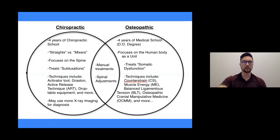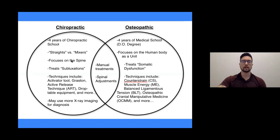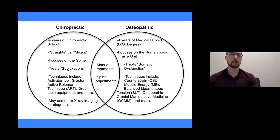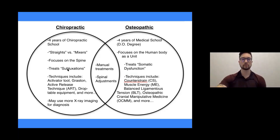How is chiropractic different from osteopathic? As an osteopathic doctor, you go to medical school, focus on the body as a full unit, treat somatic dysfunction, and use various techniques. In chiropractic, you go to four years of chiropractic school, focus a lot of times just on the spine, and treat subluxations. They have their set of tools and techniques. The only spot where we overlap is manual adjustments of the spine.